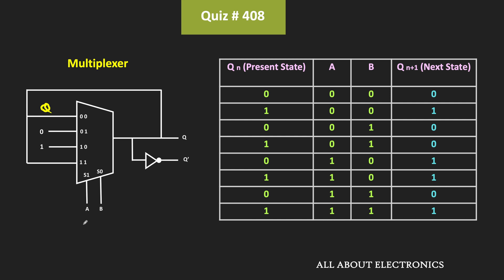When A is 0 and B is 1, the second input will get selected. As you can see, this second input is equal to 0, meaning the output Q will remain 0. That means, with this input combination, irrespective of the present state of the circuit, in the next state the output will become 0.